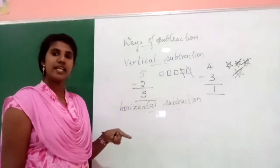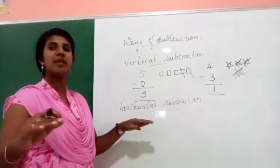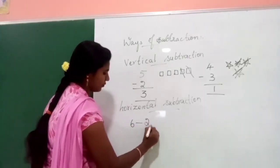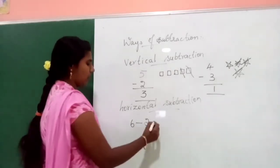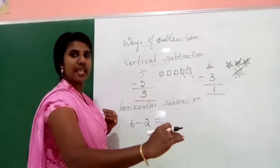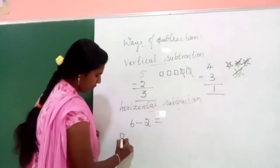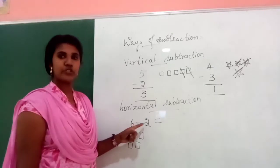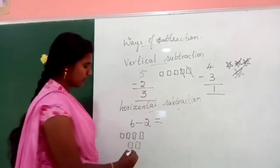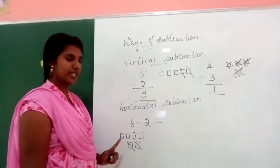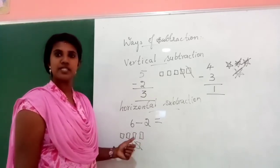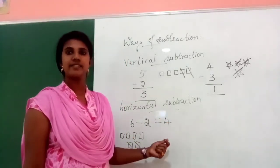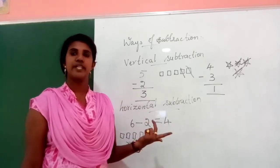Now horizontal subtraction. In horizontal subtraction, we write the numbers in the same line — no up and down, everything on the same line. Example: 6 minus 2. Draw 6 boxes in a row and cross out 2. What is the remaining? 1, 2, 3, 4. The answer is 4. So 6 minus 2 equals 4.